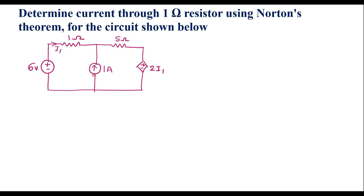Since the circuit consists of dependent sources, we need to calculate 3 parameters: VOC, that is open circuit voltage (also known as Thevenin's voltage VTH); ISC, the short circuit current; and Rn, the Norton's resistance.